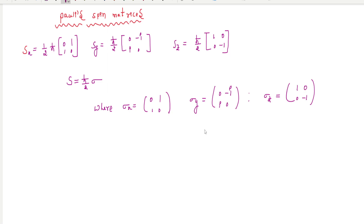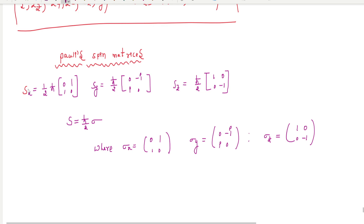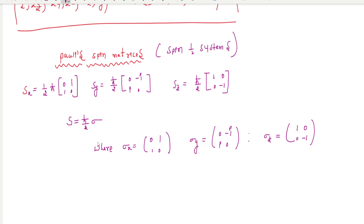From the definition it is observed that their eigenvalues are plus or minus 1, and these matrices strictly follow some unique properties. The spin-half systems — the most stable elementary particles like electrons, protons, etc. — come under the spin-half system category.